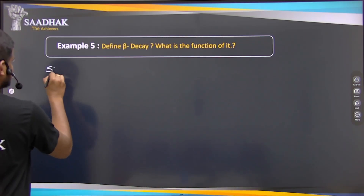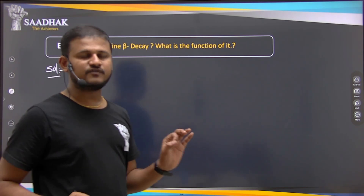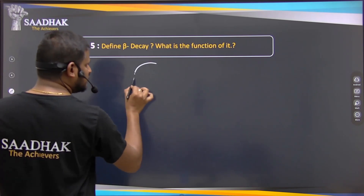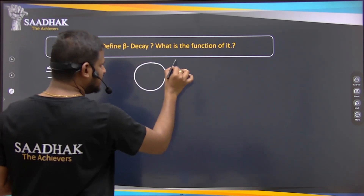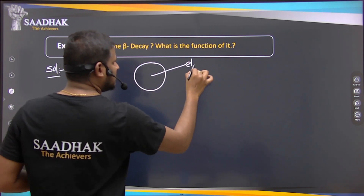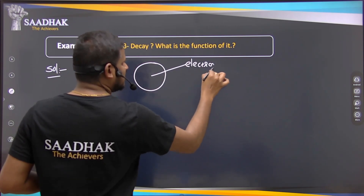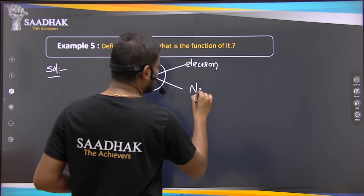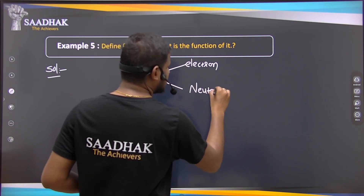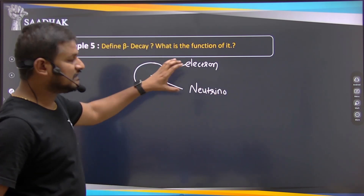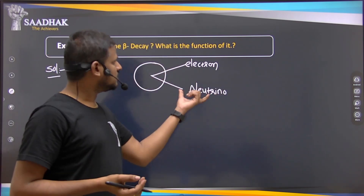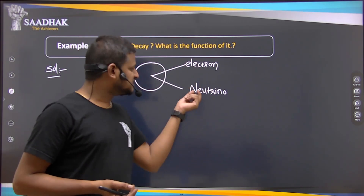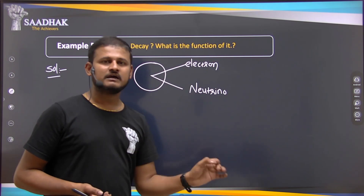Fifth question: What is beta decay? Beta decay is a radioactive phenomenon. The nucleus breaks down into an electron and one uncharged particle called neutrino. It breaks down into an electron and an uncharged particle called neutrino — this is called beta decay.